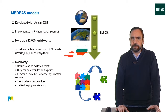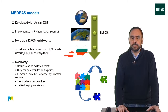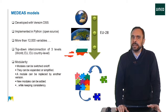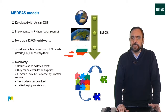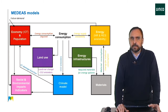The MEDEAS models have been developed in three geographic scales: World, Europe, and Country. The Country models, Austria and Bulgaria only, need data provided by the European model. In turn, the European model needs data provided by the world model. The structure of these models is essentially the same, and therefore, in this course, we will focus on understanding the world model.